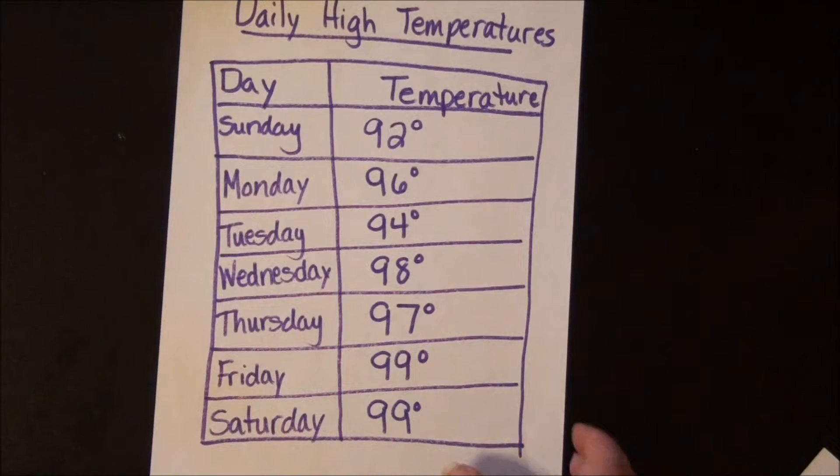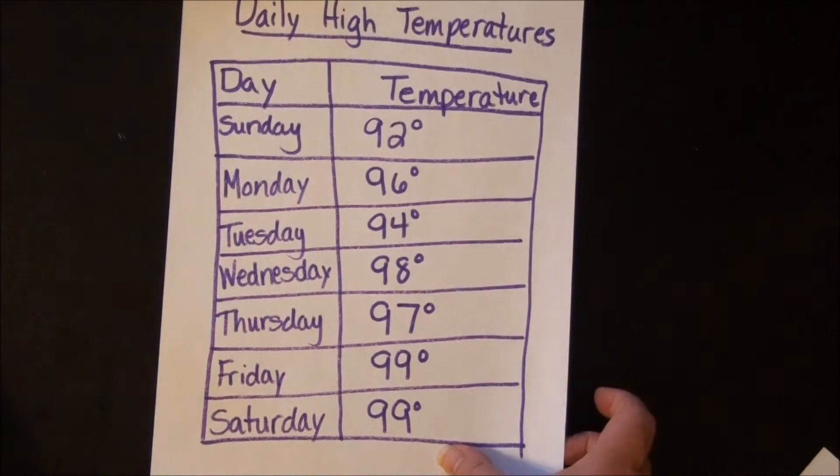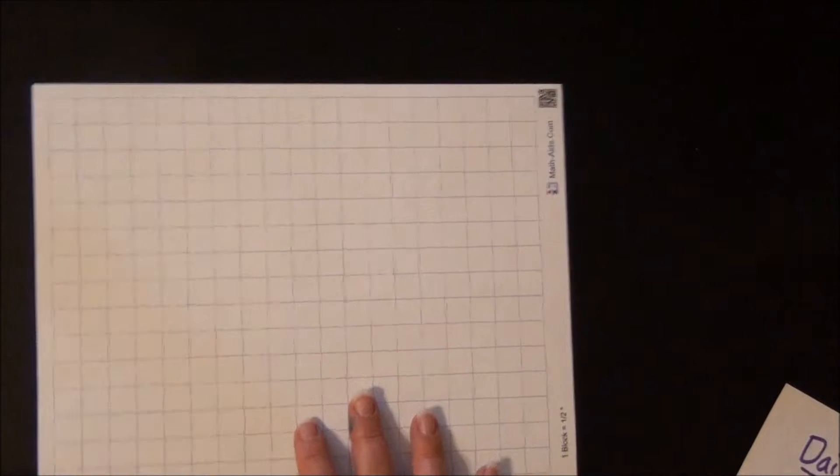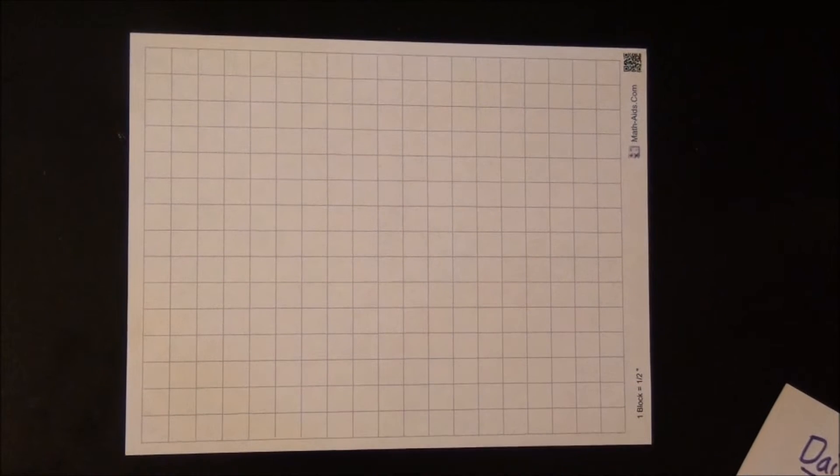So what we're going to do first is draw our line graph. It's best to use a piece of graph paper, and in third grade I like to use half inch square graph paper.